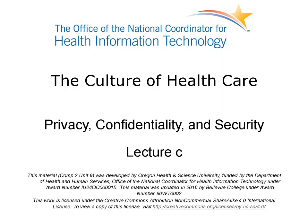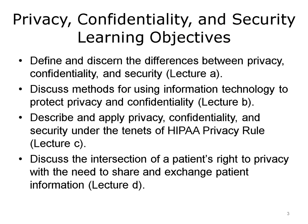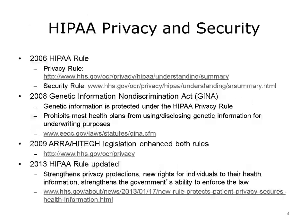It discusses how care is organized within a practice setting, privacy laws, and professional and ethical issues encountered in the workplace. The objectives for privacy, confidentiality, and security are to define and discern the differences between privacy, confidentiality, and security, discuss methods for using information technology to protect privacy and confidentiality, describe and apply privacy, confidentiality, and security under the tenets of the HIPAA security rule, and discuss the intersection of a patient's right to privacy with the need to share and exchange patient information.